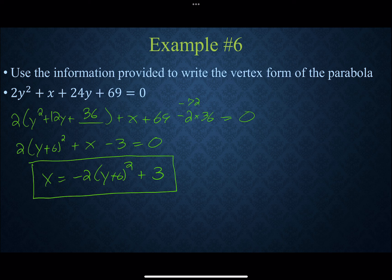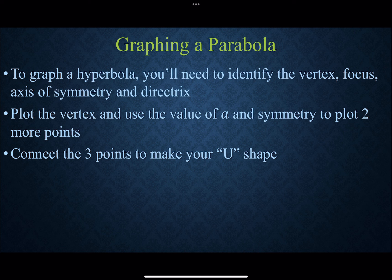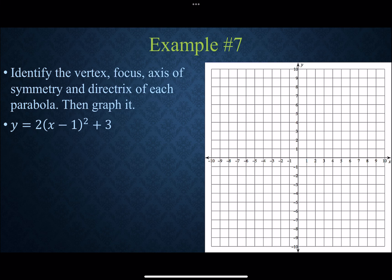To graph parabolas, find the vertex, focus, axis of symmetry, and directrix. Plot the vertex, note that focus and directrix don't need to be plotted, and draw the axis of symmetry as a dotted line. Use the value of a with symmetry to plot two more points: plot one point, then symmetry gives you the second. Depending on the equation, determine how to find those symmetric points.